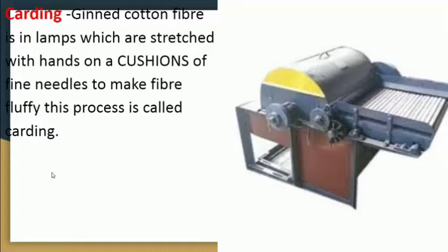Next is carding. Carding is another process which happens after ginning. In this, gin cotton fiber is present in lumps and is stretched over the hands on a cushion of fine needles so that we get fluffy fiber. Here you can see a carding machine.